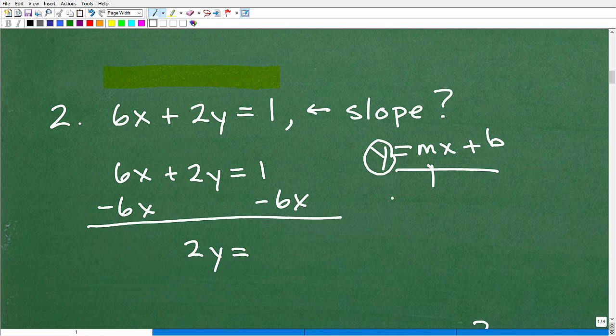All right, so we got 2y is equal to now I have 1 + -6 or -6 + 1. But here's the thing, I don't want to write this as 1 - 6x. So what I want to do, remember the x component has to be first. So this is going to be -6x + 1.